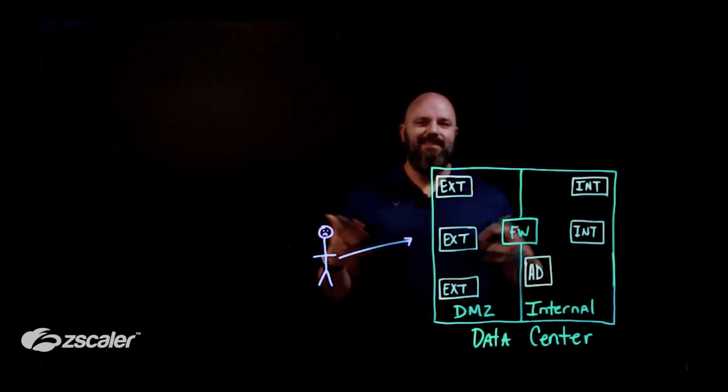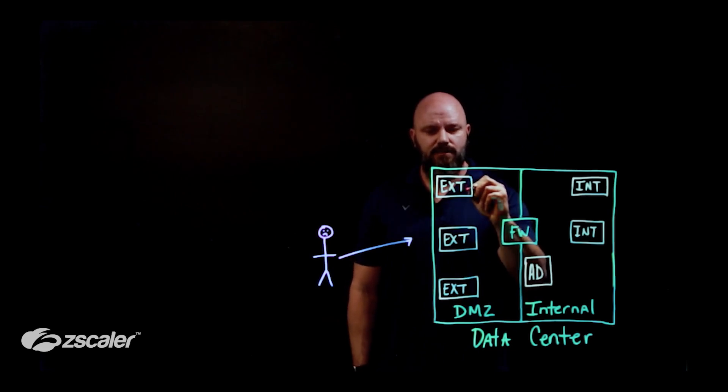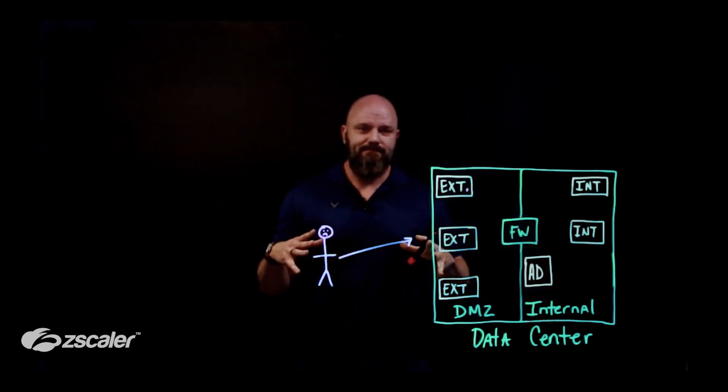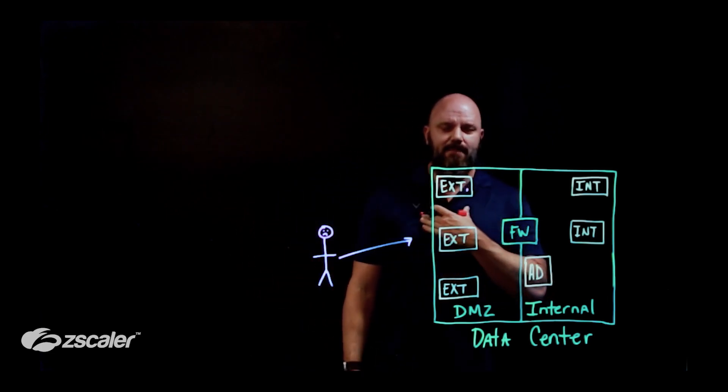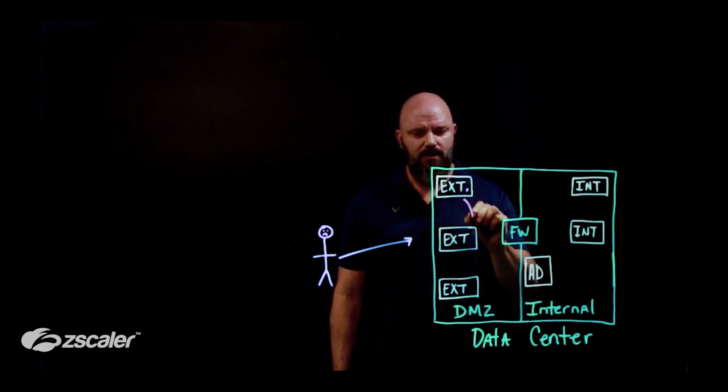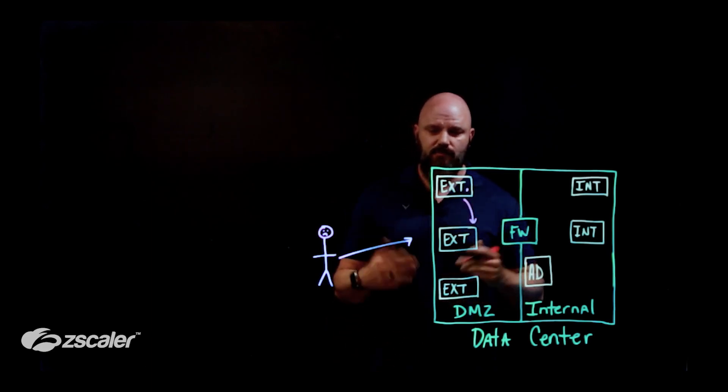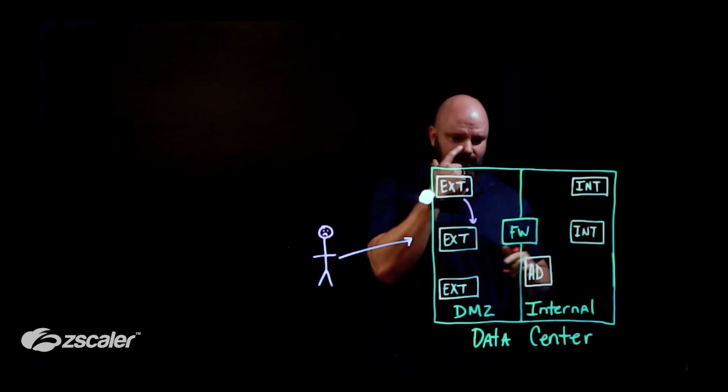Maybe this threat actor comes in, gets lucky, they find like an Apache Struts vulnerability on this server. Once I'm in, once I am that bad person, my goal is to bounce around on the network. Maybe I want to try to talk to another external server in the DMZ or better yet, maybe I want to get into the internal side of things.